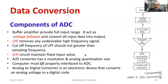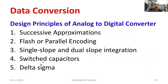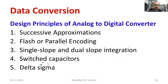There are different techniques for ADC. You can use the following techniques for analog to digital converters: successive approximation, flash or parallel encoding, single slope and dual slope integration, switched capacitors, and finally the delta-sigma technique.